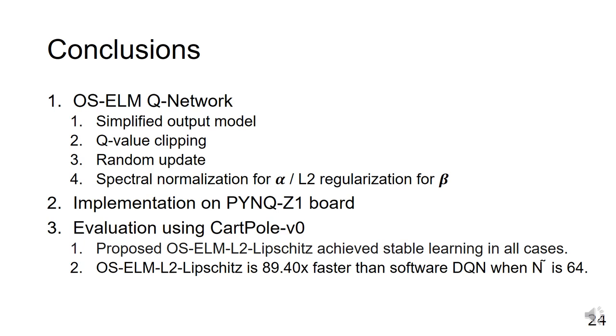The first technique is the simplified output model. The second is Q-value clipping. The third is random update. And the fourth is the combination of spectral regularization for α and L2 regularization for β.